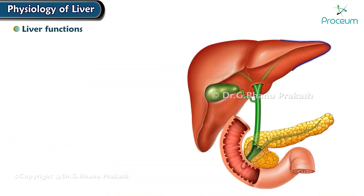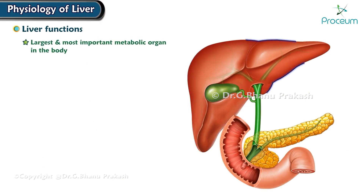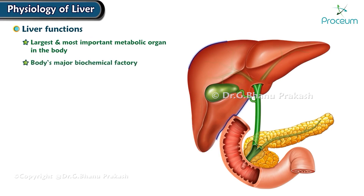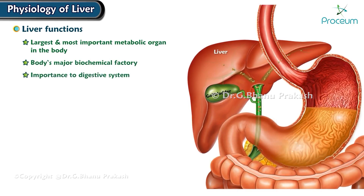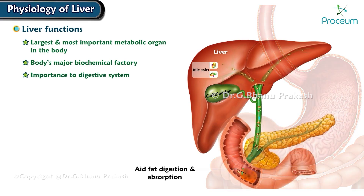Let's take a look at the liver functions. The liver is the largest and most important metabolic organ in the body. It can be viewed as the body's major biochemical factory. Its importance to the digestive system is its secretion of bile salts, which aid fat digestion and absorption.